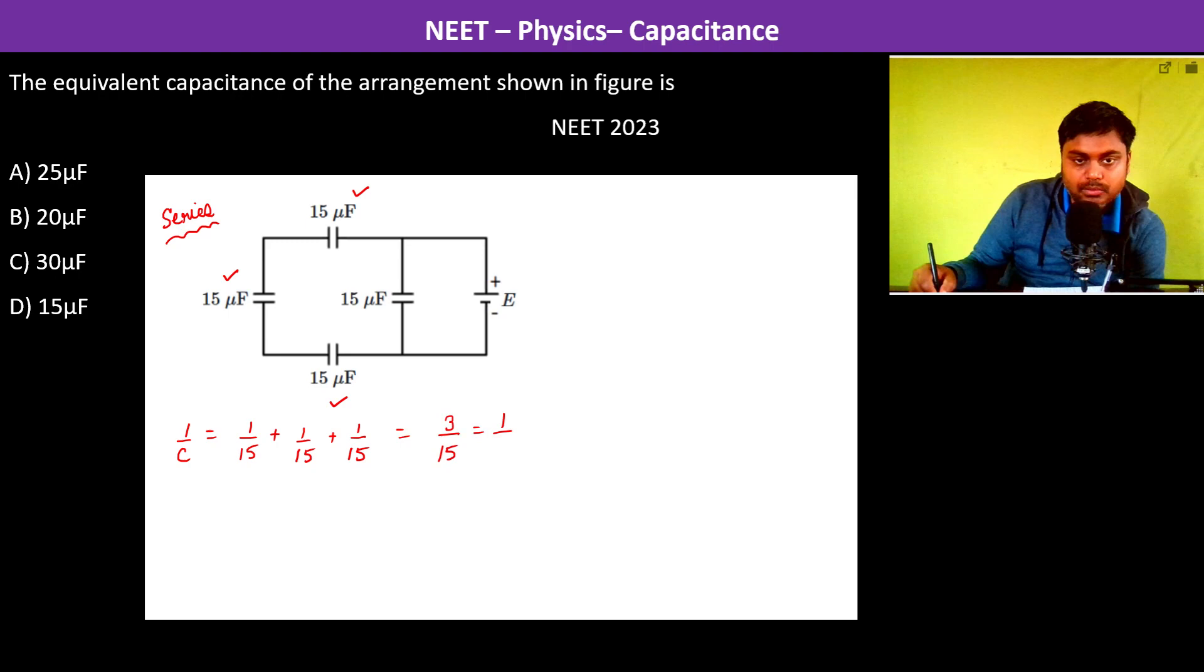which is 1 upon 5. So therefore, the capacitance is 5 micro Farads.